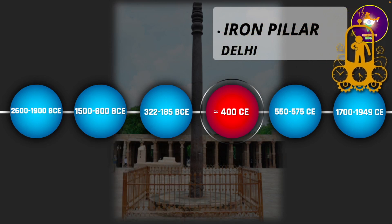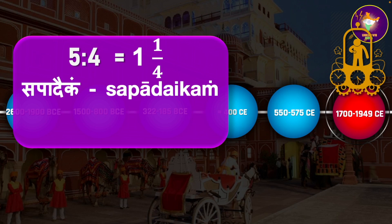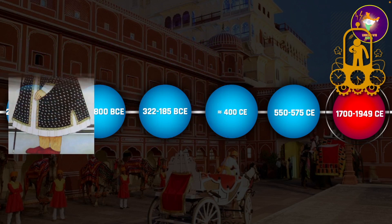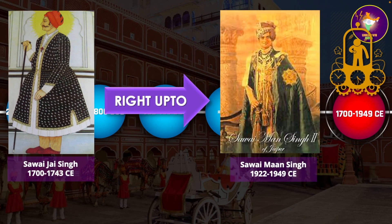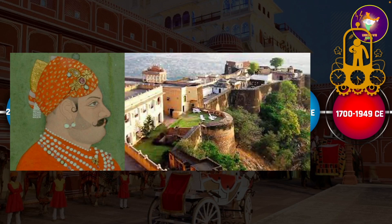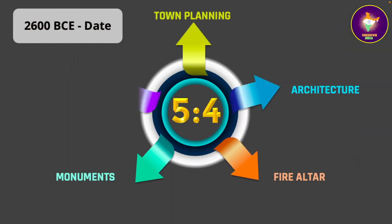We finally travel forward to the most recent period of 1700 to 1949 CE to explore a very unique usage of the ratio 5 to 4. When expressed as a fraction, 5 to 4 is one and a quarter, known as sapadhaikam in Sanskrit, from which the Hindi word sava is derived. This gave rise to the title of honor Sawai for a generation of rulers of Jaipur, starting with Sawai Jai Singh. Sawai meant a person who is a quarter more in valor, intelligence, ability, and all other good qualities than a normal person. Even cities founded by these rulers took on this title — for example, Sawai Madhopur, after its founder Sawai Madho Singh.